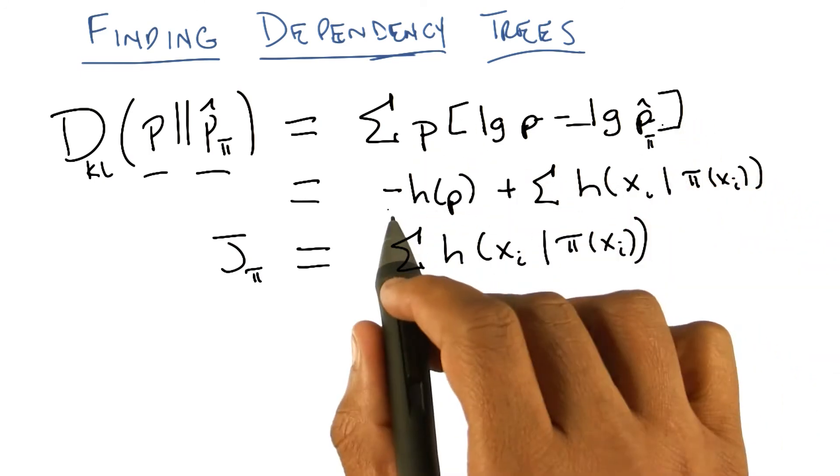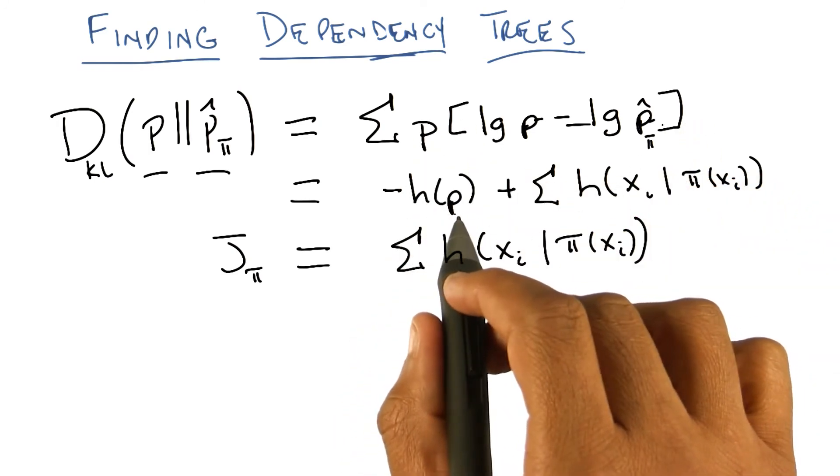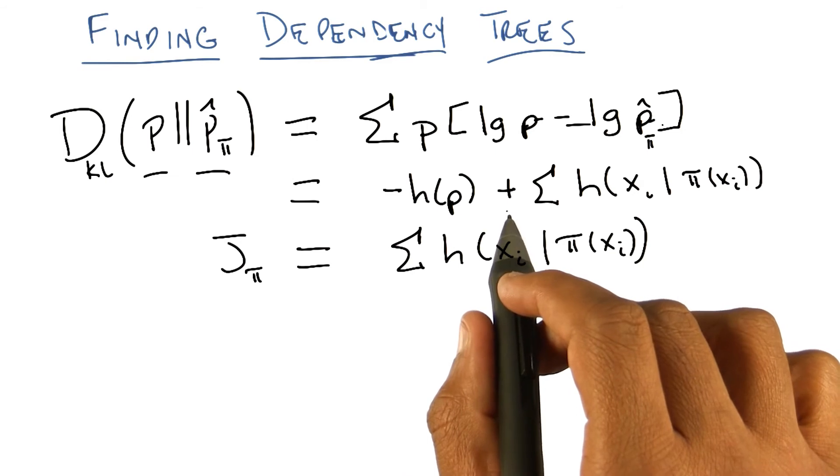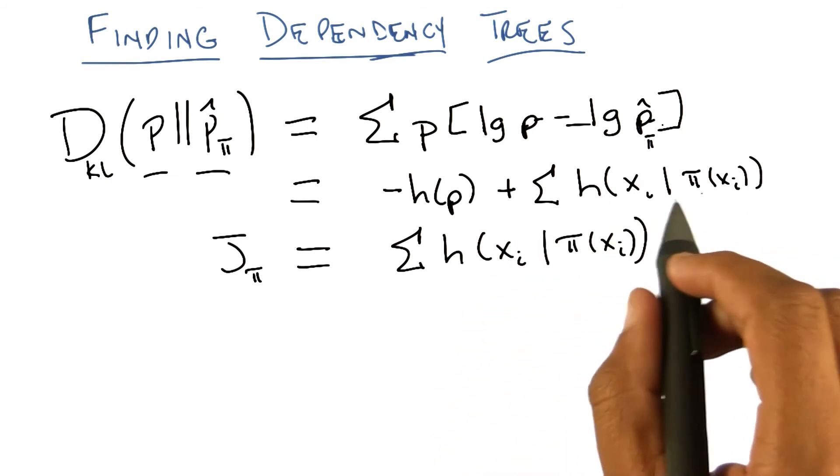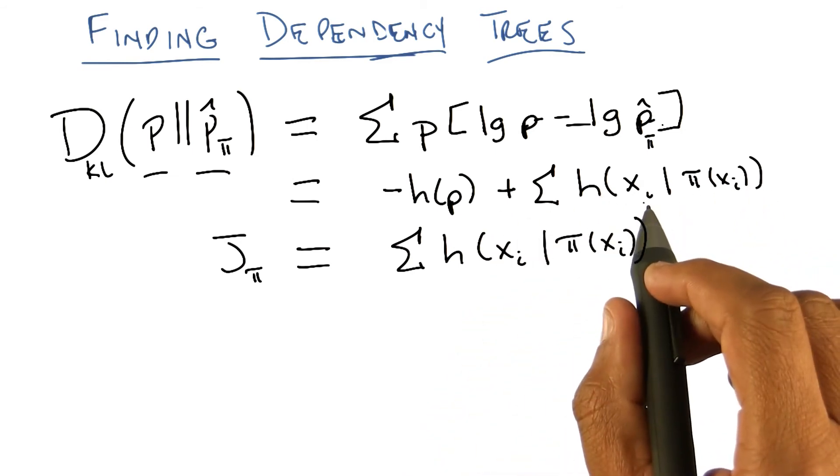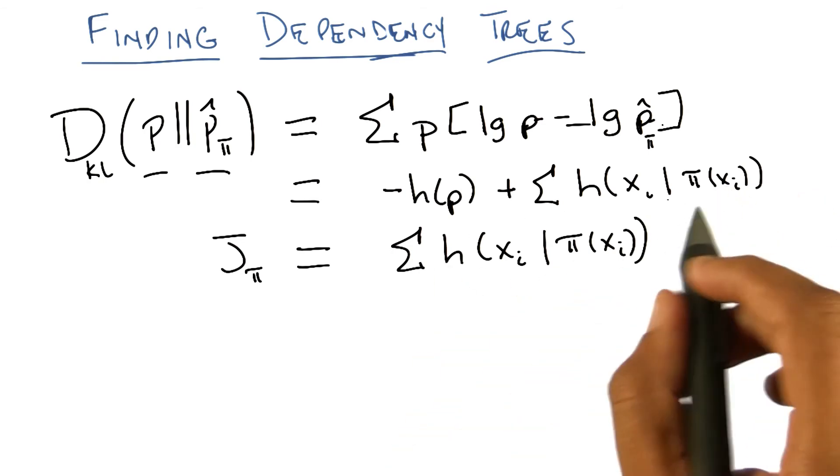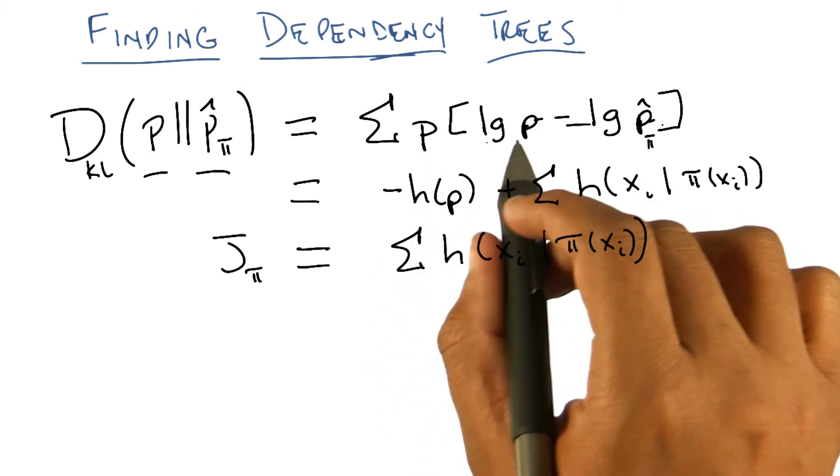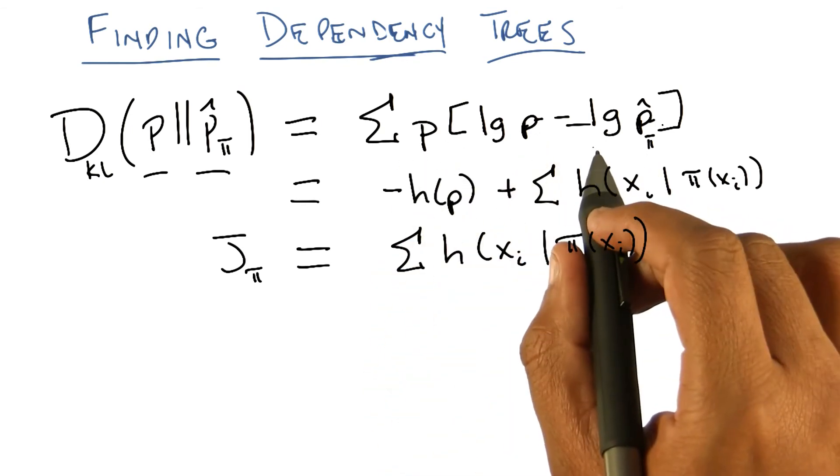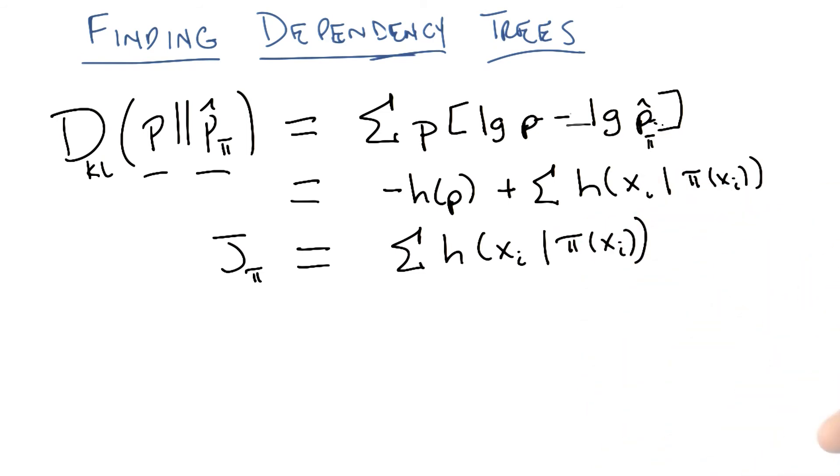So, or it's minus the entropy. And so I can rewrite this as simply minus the entropy of the underlying distribution, plus the sum of the conditional entropies for each of the Xi's given its parent. Which has some, you know, sort of intuitive niceness to it, but whatever. This is what you end up with just by doing the substitution. P log P gives you minus entropy of P, minus P log P hat, which gives you the conditional entropy according to the function, the parent function pi.